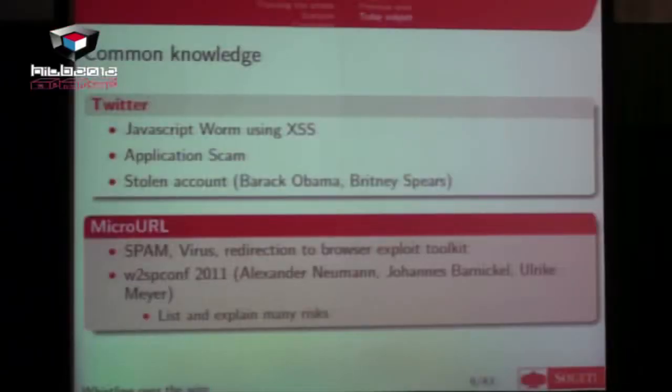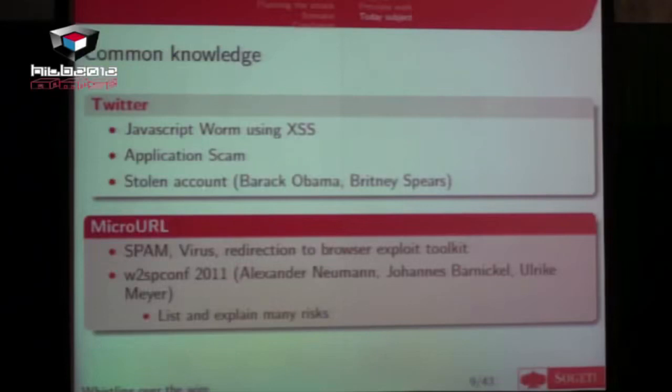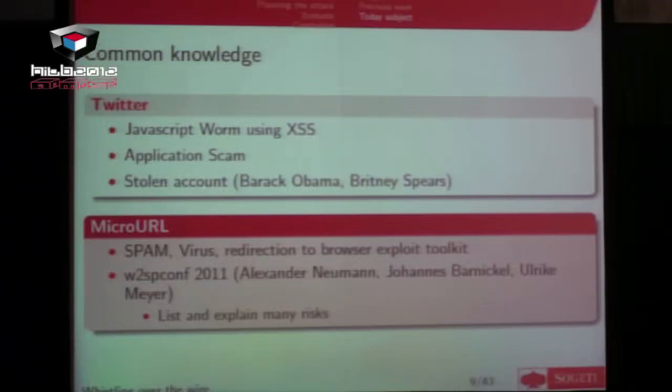There are already many things happening on Twitter: JavaScript worms with XSS, application scams where a dedicated application may publish tweets you didn't want or add friends you don't want to follow. There were also stories about stolen accounts — attackers found passwords or secret answers to mailboxes. There were also many cases about spam or viruses, since you can hide the final destination and send users to a fake website.